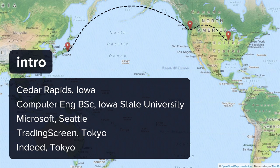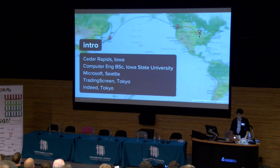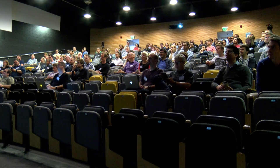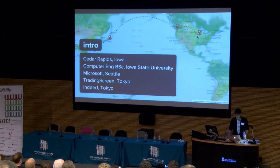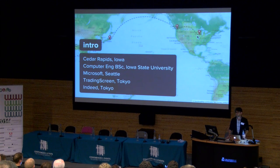A quick intro about me. I'm originally from Cedar Rapids, Iowa, which is this small state right here. Lots of corn, lots of pigs. It looks close to Chicago — it's not, that's like a five-hour drive. I got my bachelor's degree in computer engineering from Iowa State University. After graduating college, I went to Microsoft in Seattle, where I worked on the Visual Basic compiler team, helping to ship the first couple versions of .NET when that was a new thing.